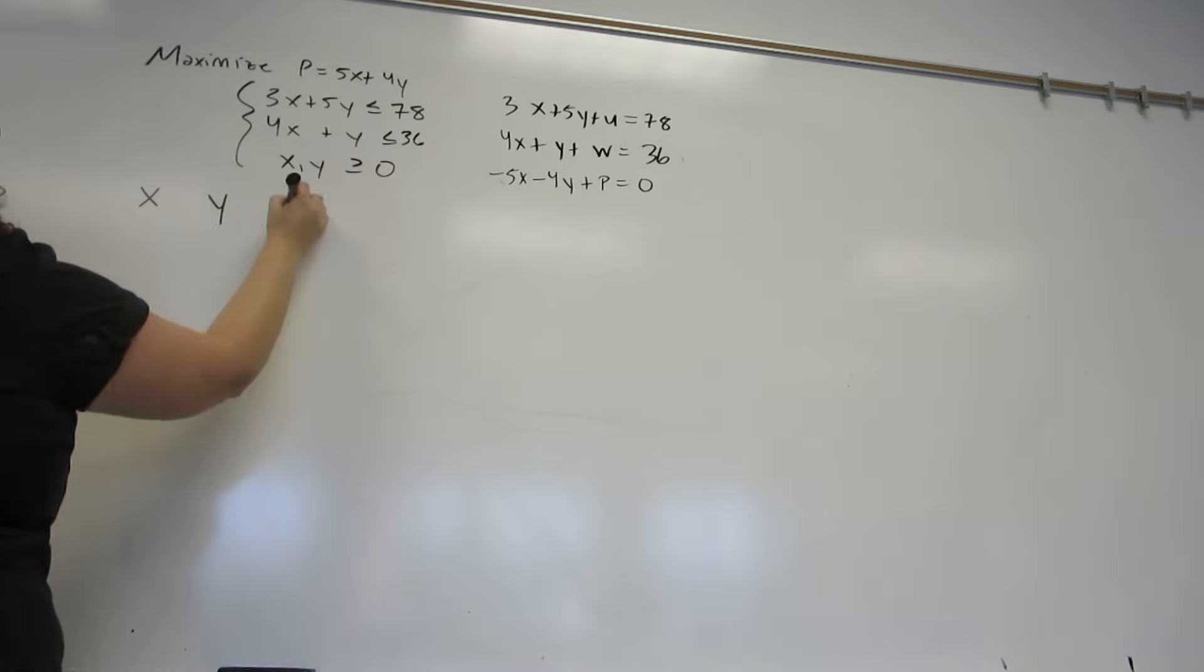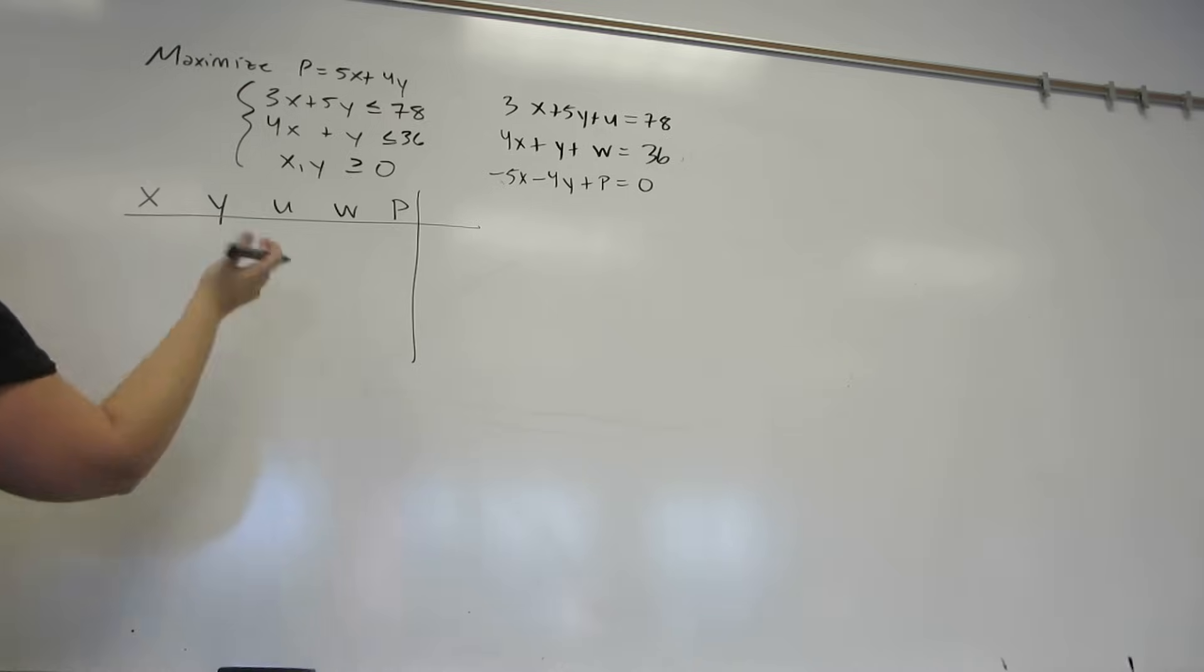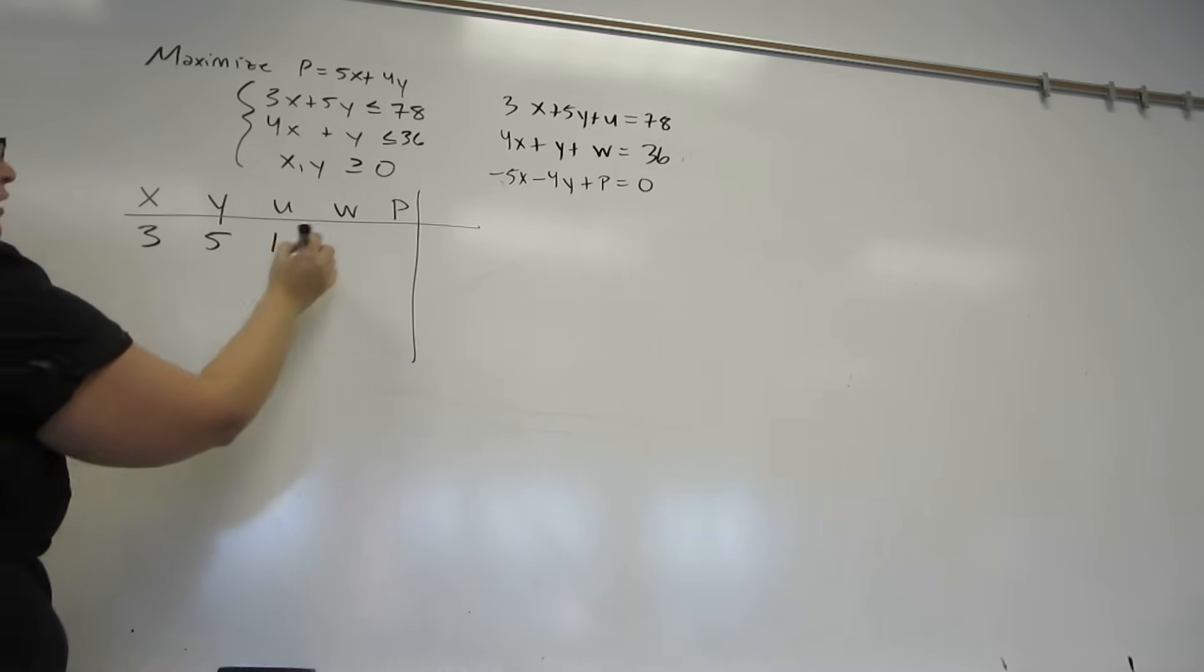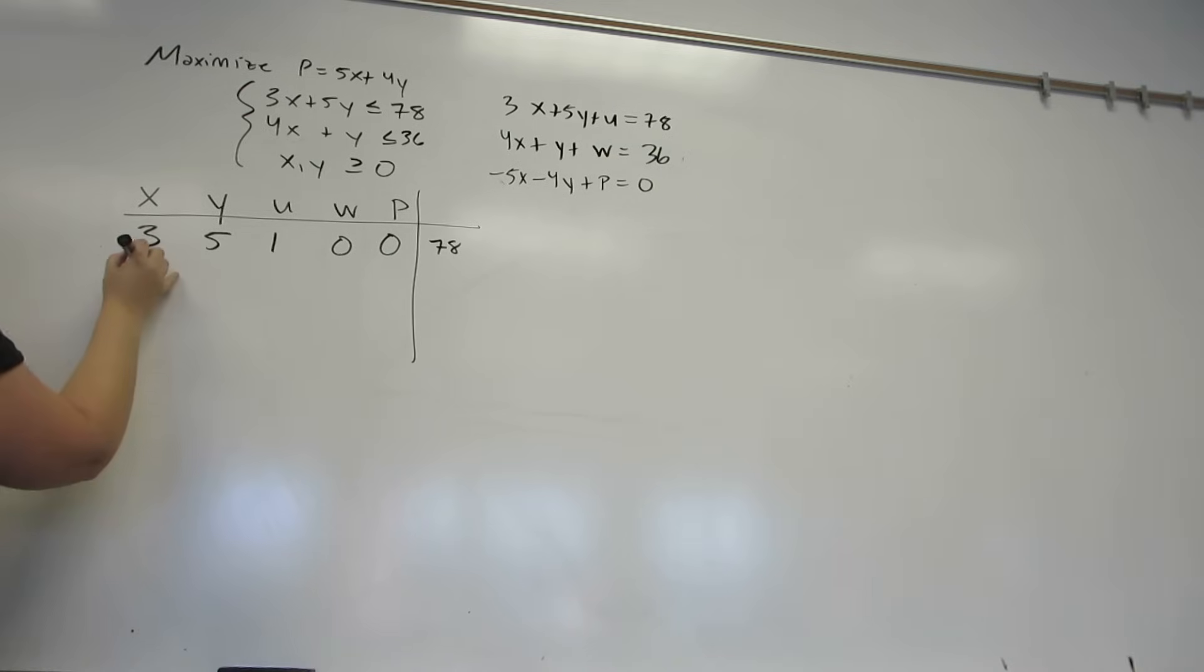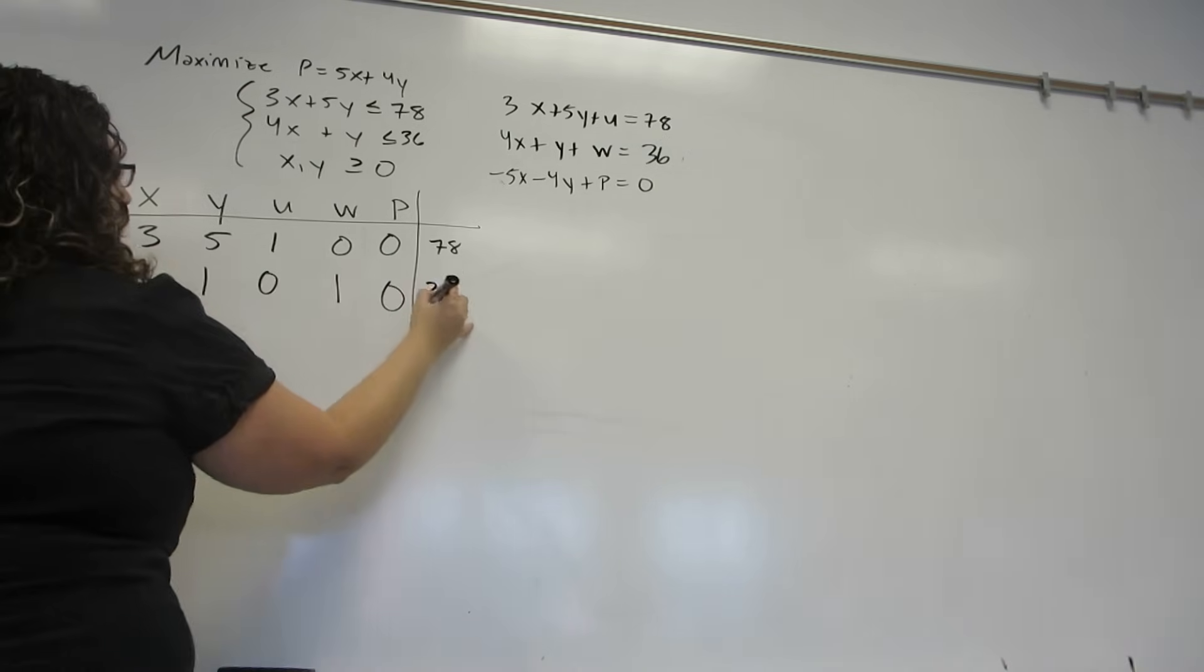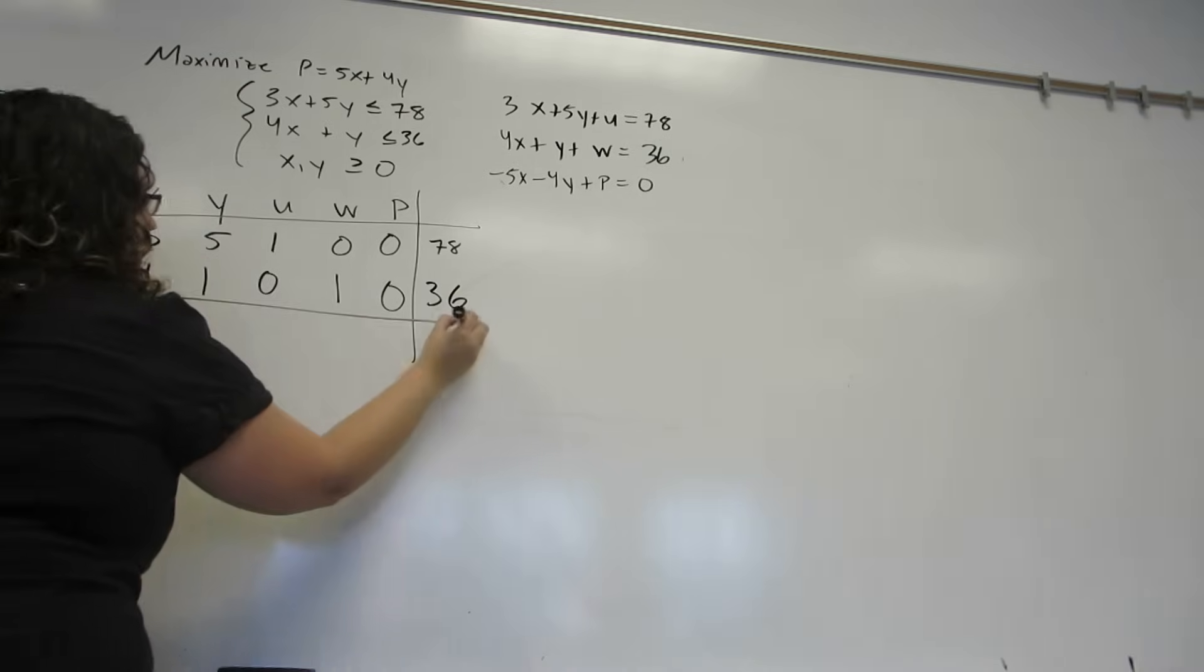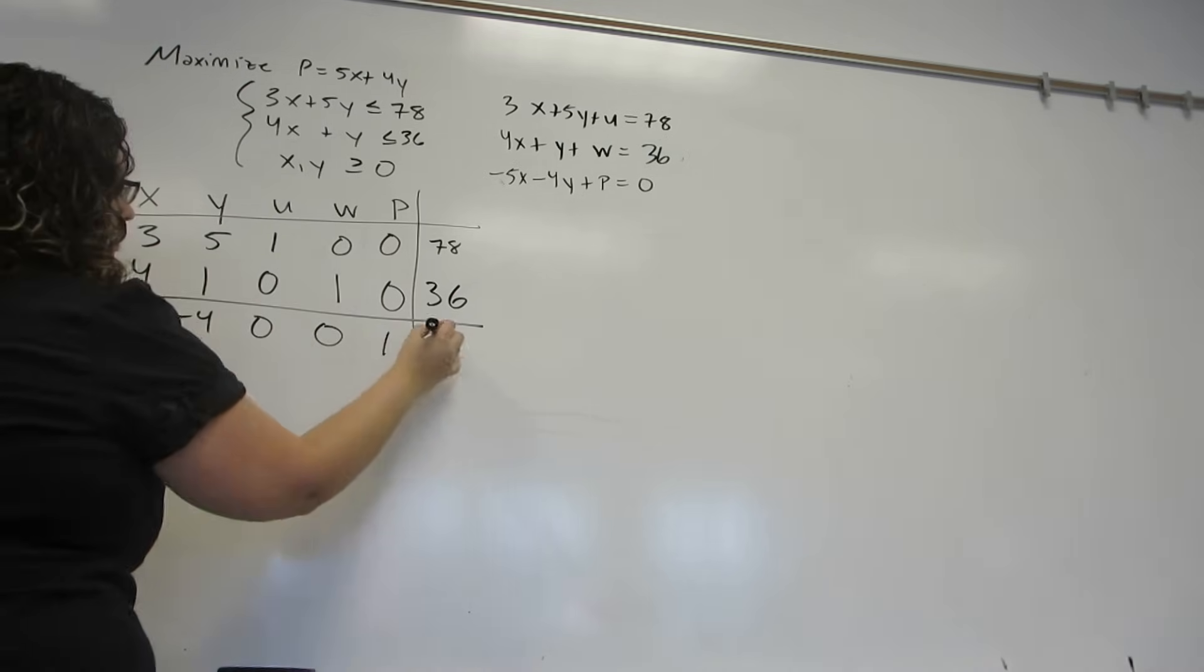We have our variables we're finding listed across the top. And then each row is the coefficients of one of those equations. 3, 5, 1, 0, 0, 78, 4, 1, 0, 1, 0, 36. And then the last line is for the objective function. Minus 5, minus 4, 0, 0, 1, 0.